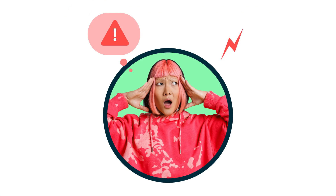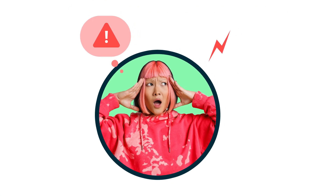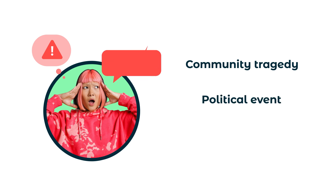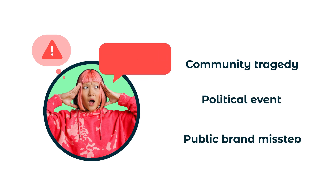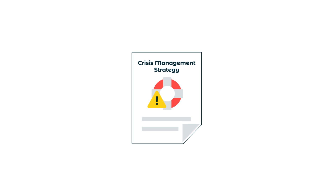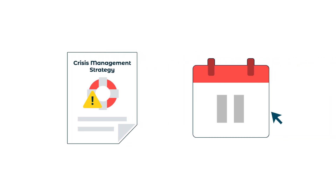Sense trouble in the air? Whether it's a community tragedy, political event, or a public brand misstep, a post going live at the wrong time can add fuel to the fire. Acting fast is important, and the first step in your crisis management strategy should be to hit pause on your scheduled posts.